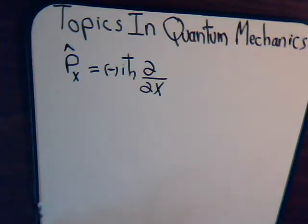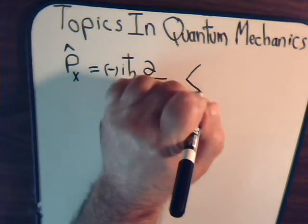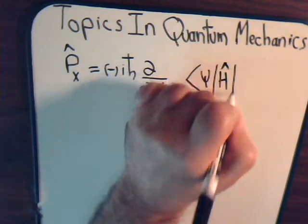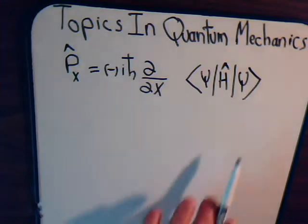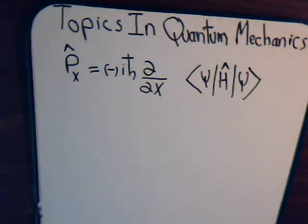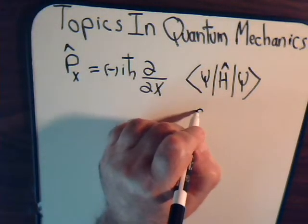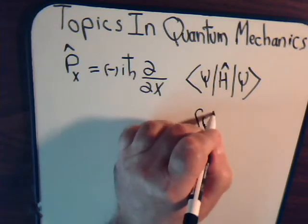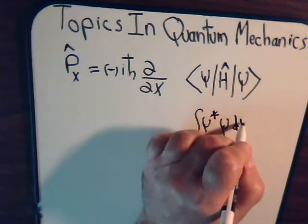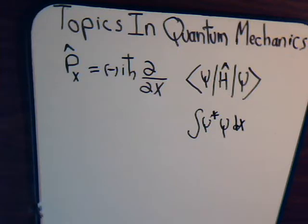Remember from our previous videos that for an operator to be Hermitian it must have this property: that this must be a real number. The things that it's operating on might be complex, but when you perform this operation it has to be a real number. For functions, the way that we perform inner products is we integrate them, multiply them by their complex conjugate. We will just designate dx because for the moment we're restricting our discussions to just particles that are moving on the x-axis.